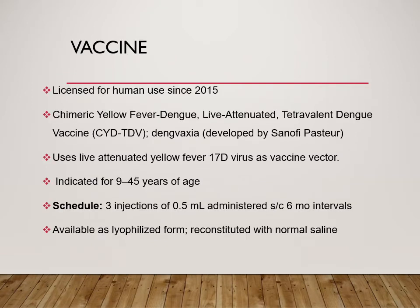Regarding the dengue vaccine: it has been licensed for human use since 2015. It is a chimeric vaccine, meaning the yellow fever vaccine vector (17D virus) was taken and dengue virus genes were inserted into it. It is a live attenuated tetravalent dengue vaccine — the brand name is Dengvaxia. It is given to individuals aged 9 to 45 years as three subcutaneous injections of 0.5 ml, each six months apart.